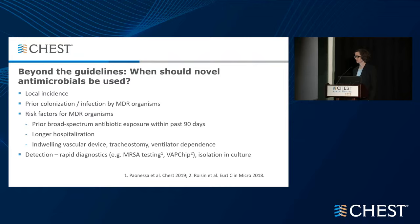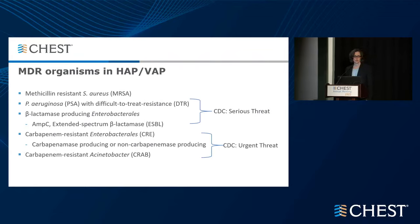Additionally, detection via culture or rapid diagnostics indicating the presence of MDR organisms early would be other indications for novel antimicrobials. The organisms of concern in HAP and VAP include MRSA, and the CDC has defined serious threats from Pseudomonas aeruginosa with difficult-to-treat resistance, ESBL-producing Enterobacterales, and carbapenem-resistant Enterobacterales and carbapenem-resistant Acinetobacter, which are in the CDC urgent threat category. Unfortunately, the frequency of isolation of these organisms is increasing worldwide.